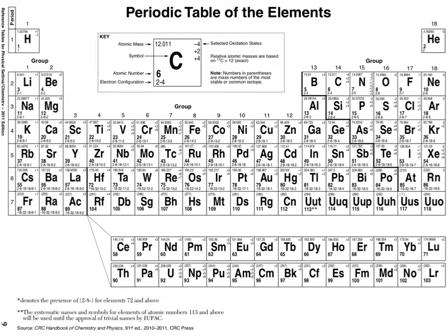In order to draw a Lewis dot diagram, you need to know the element's valence number. The valence number is the last number in the electron configuration. For carbon shown in the key on the periodic table, it's the 4 that tells you the valence number of electrons.